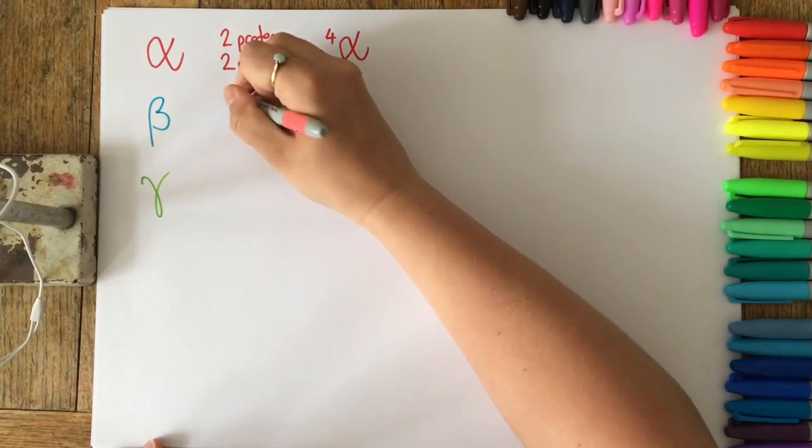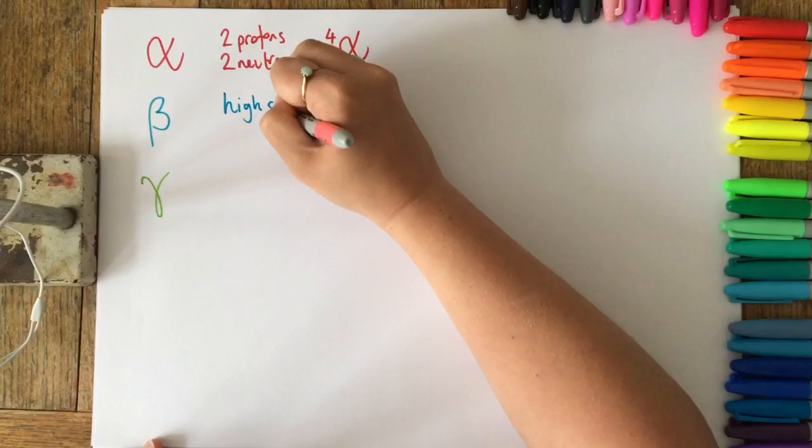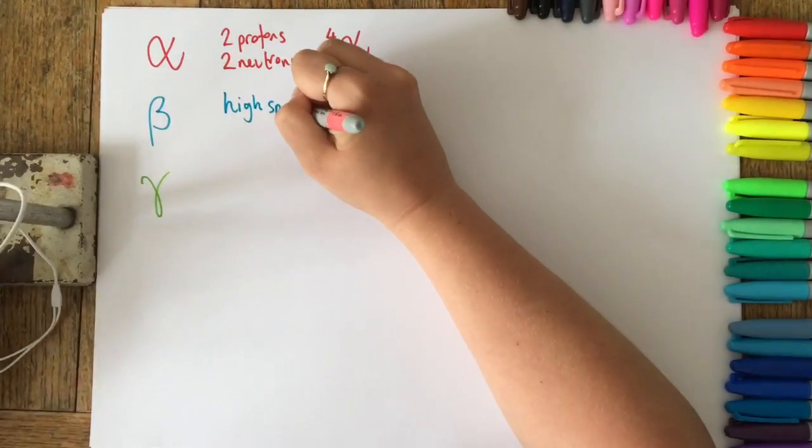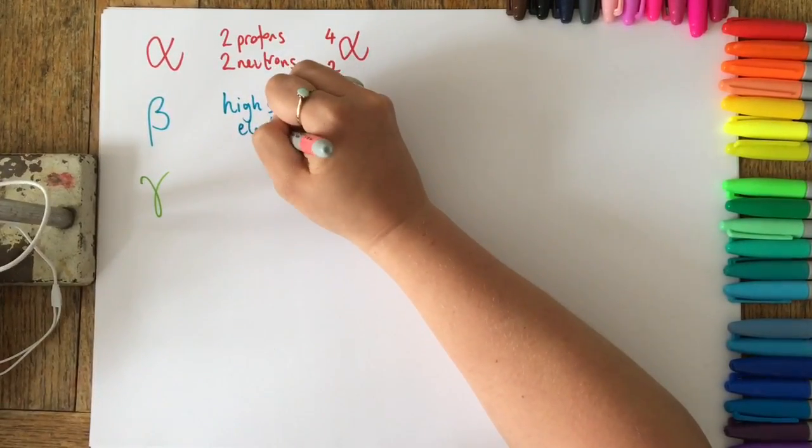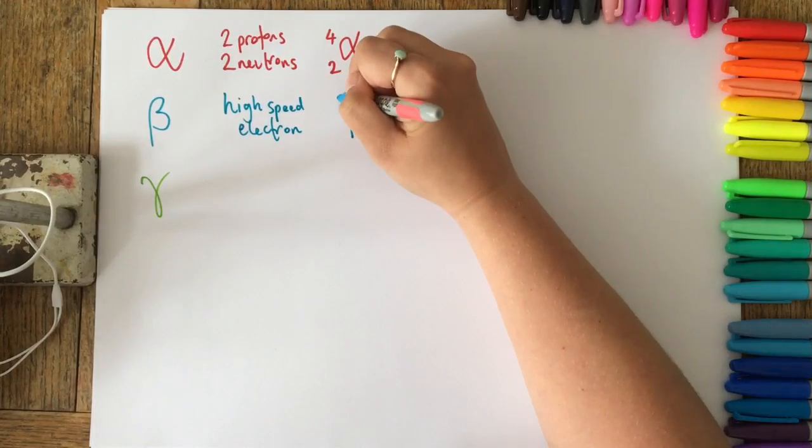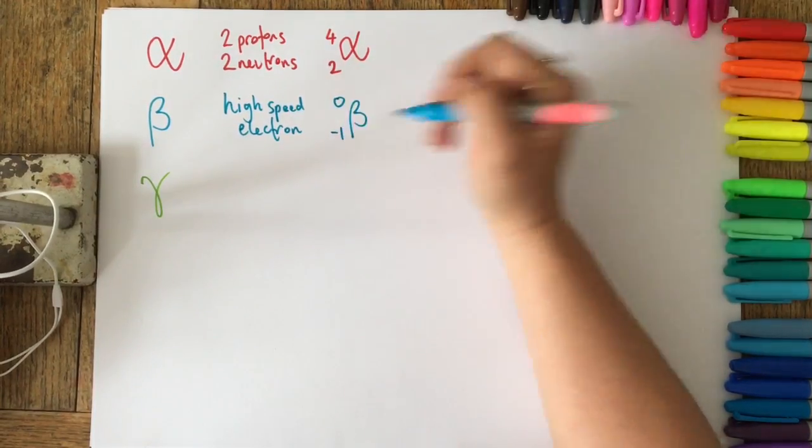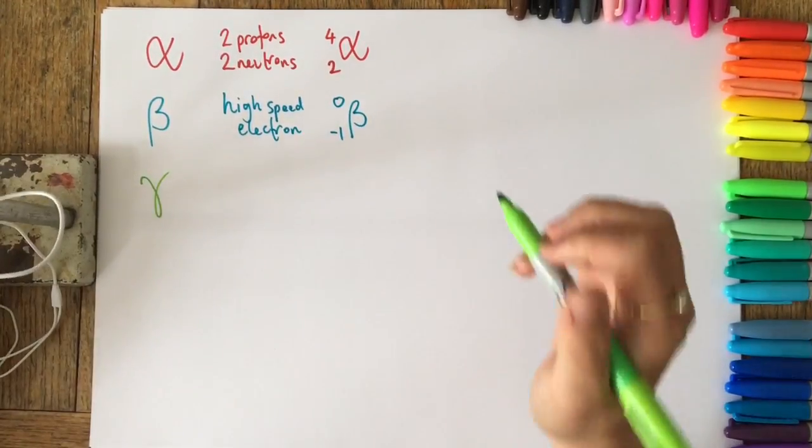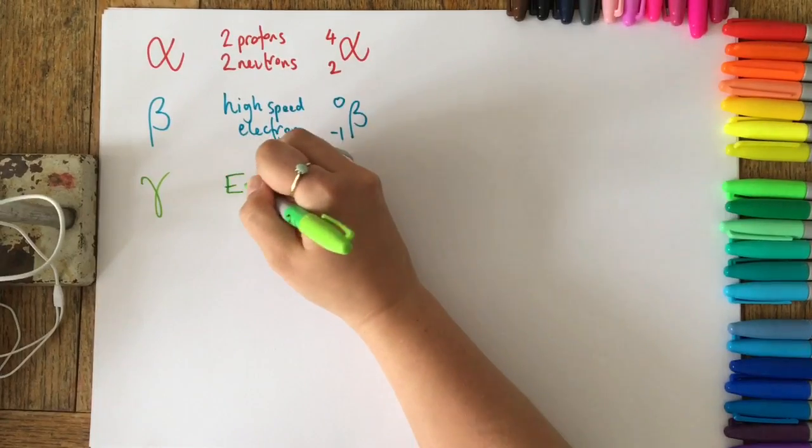Beta decay is a neutron decaying into a proton and a high-speed electron, which is sent out of the nucleus. The mass of a beta particle is zero, and the proton number is minus one.